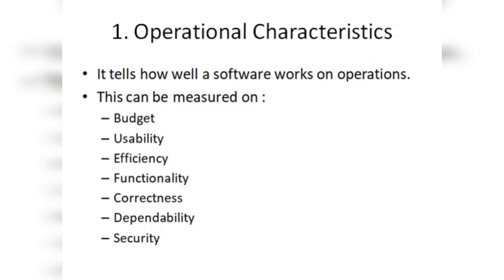Operational characteristics means: how efficiently is the software you are building working at the operational level? Operational level means how well it can perform its work. All other terms signify this — for example, budget: if you say your software is efficient, that means it works within budget or not. Next is usability — how can it be utilized, how can it be used, how easily can it be used?